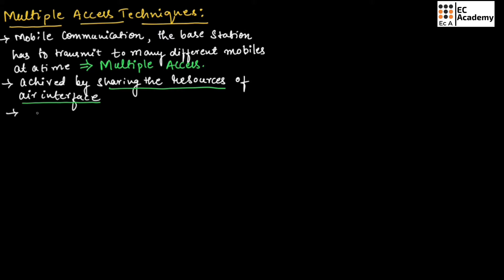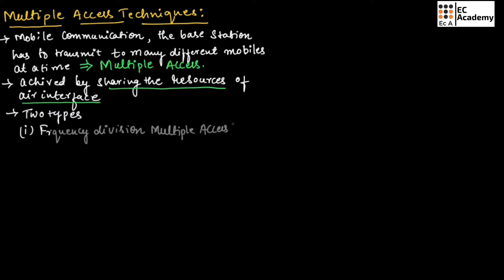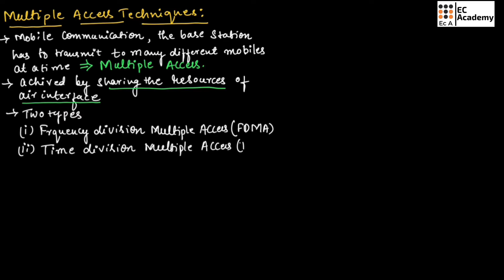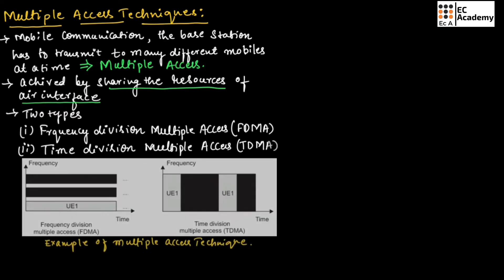There are two types of multiple access techniques. The first one is frequency division multiple access, commonly known as FDMA, and the second one is time division multiple access, commonly known as TDMA. This figure shows examples of both FDMA and TDMA.